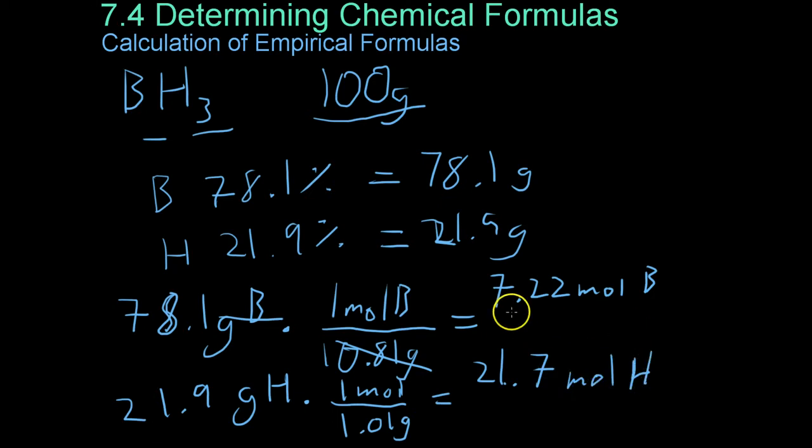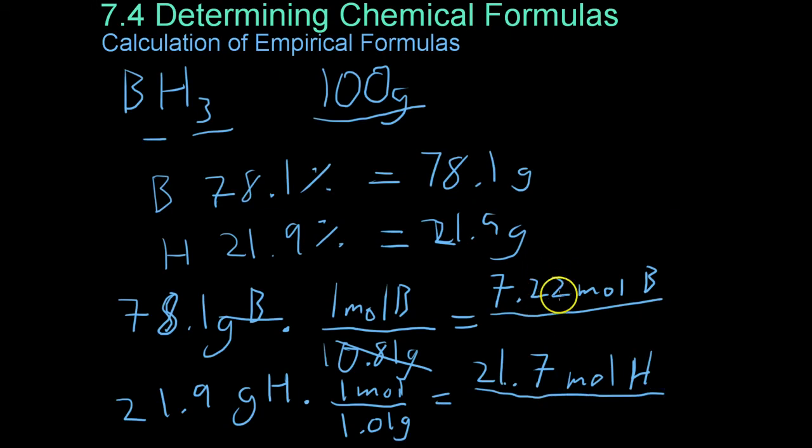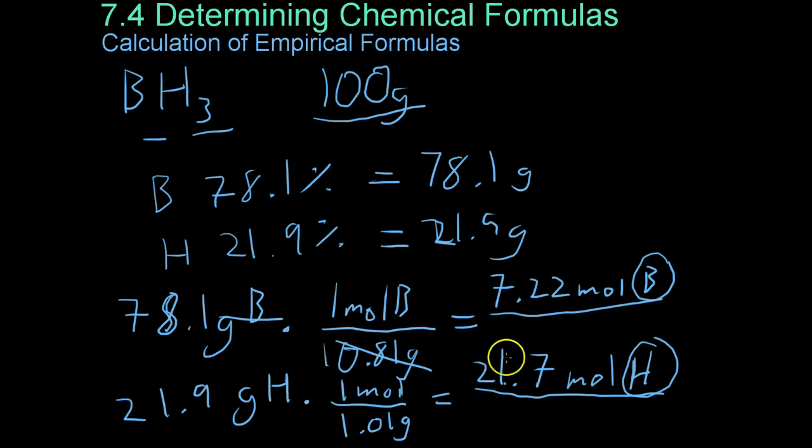Now you have to look at these two molar compositions and see which number has the smaller number of moles. That's going to end up being the element that has fewer atoms within the final empirical formula. Now, 7.22 is obviously less than 21.7. So what you do is you divide both molar ratios by the smaller of the two numbers.